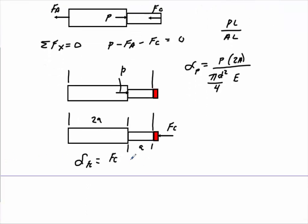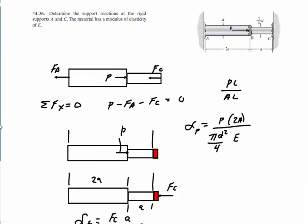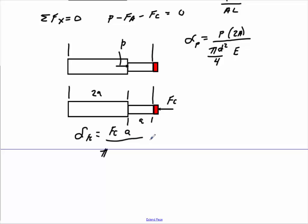So FC, we'll do this one, is over A times A. And here would be pi. The diameter here is three-fourths d. So we'll do three-fourths d squared divided by four. Again, pi d squared divided by four times E.